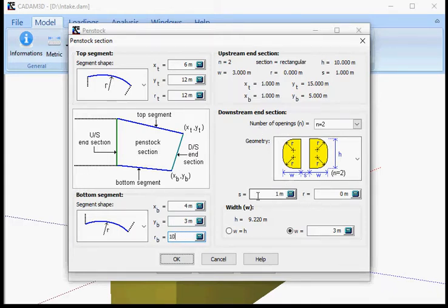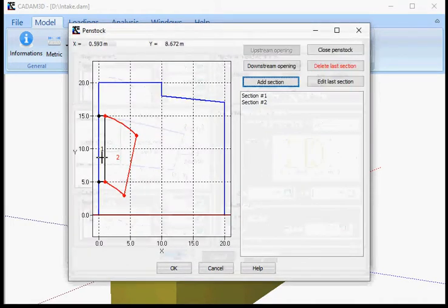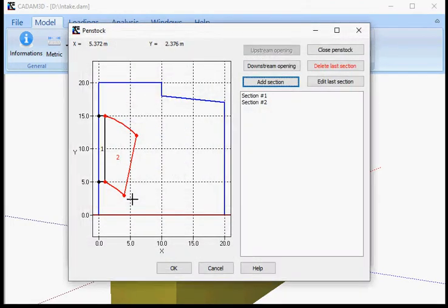I'm going to put my space here equal to 0, which means I'm going to close the pier at this level. Then I click OK. I have this profile that was added like this.